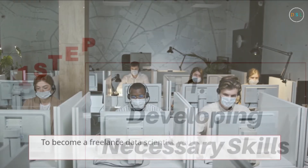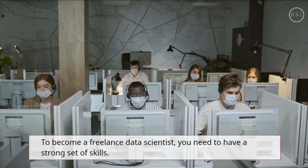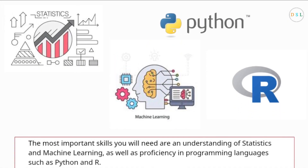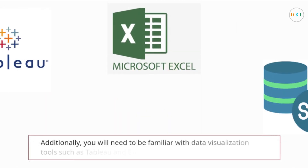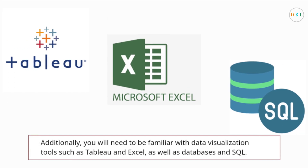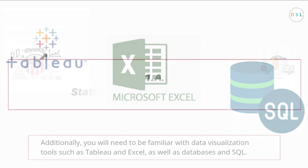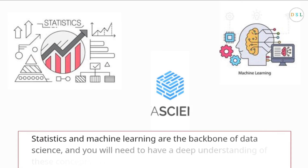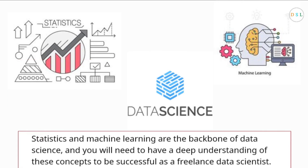One: developing the necessary skills. To become a freelance data scientist, you need to have a strong set of skills. The most important skills you will need are an understanding of statistics and machine learning, as well as proficiency in programming languages such as Python and R. You will also need to be familiar with data visualization tools such as Tableau and Excel, as well as databases and SQL.